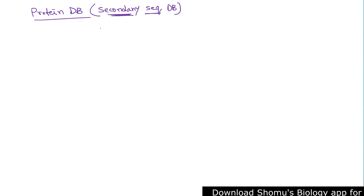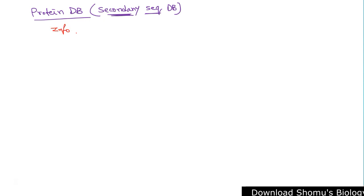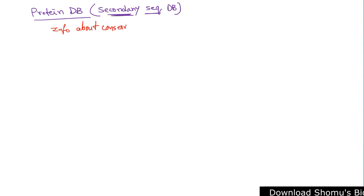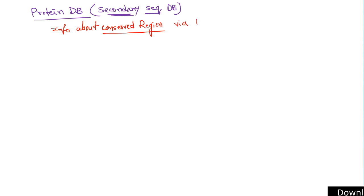In secondary type databases, we have information about conserved regions, which is very important to understand evolutionary relationships. This conserved region information can be obtained via multiple sequence alignment (MSA). These databases also have different file formats of information.